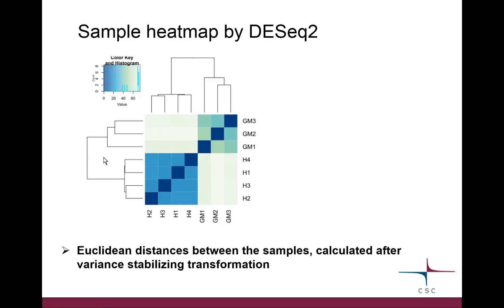The third option we are checking today is the heatmap, which is also from DESeq2. There are many options, but it's showing the Euclidean distance between the samples, and that is also calculated after the variance stabilizing transformation.